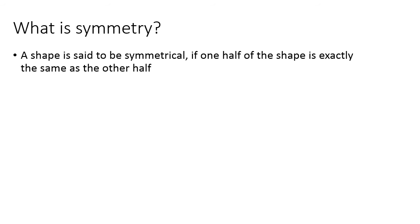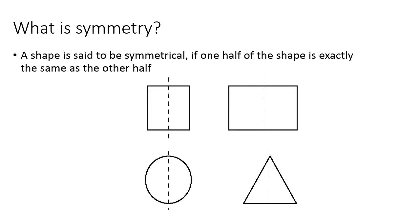There are many types of symmetry, such as reflectional symmetry, rotational symmetry, and translational symmetry. You will learn about them in your higher classes. Here are some examples of symmetrical shapes — you will observe dotted lines being made, and all these dotted lines are dividing the shapes into two equal parts.